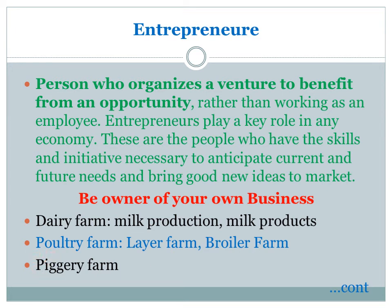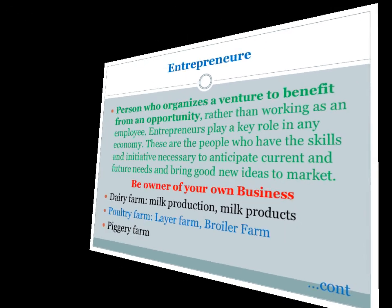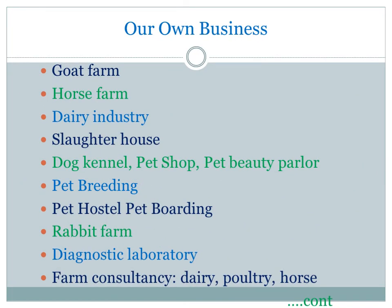They can also open a piggery farm and a goat farm — which is a very prestigious and highly earning business. A horse farm is another option. Veterinarians can have a dairy industry for milk and milk products. Dog breeding is also a lucrative business; veterinarians can open a dog kennel.